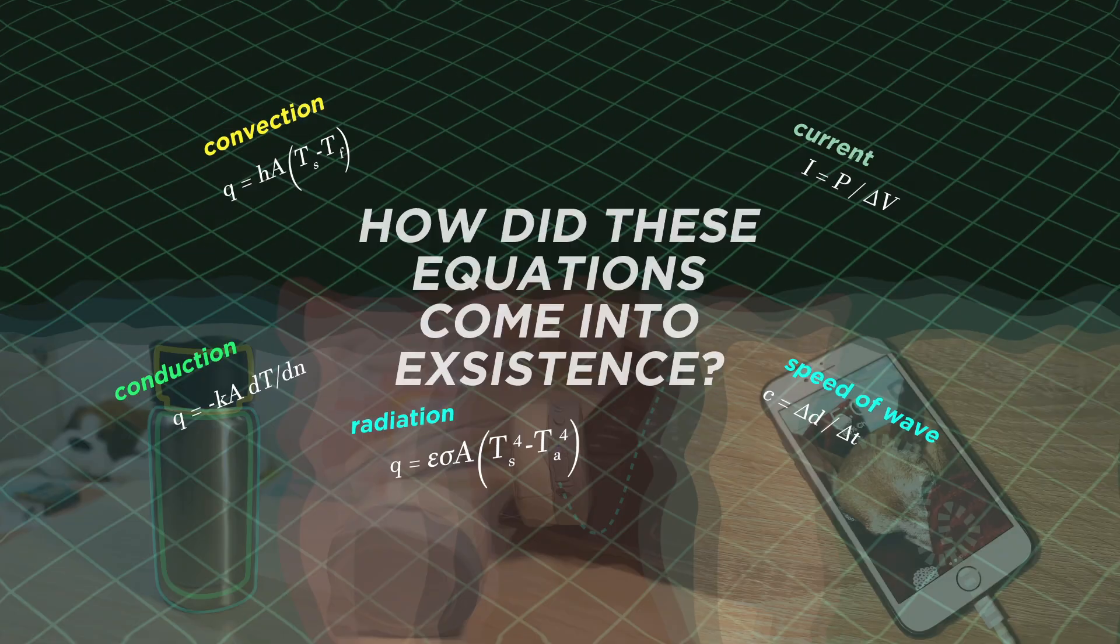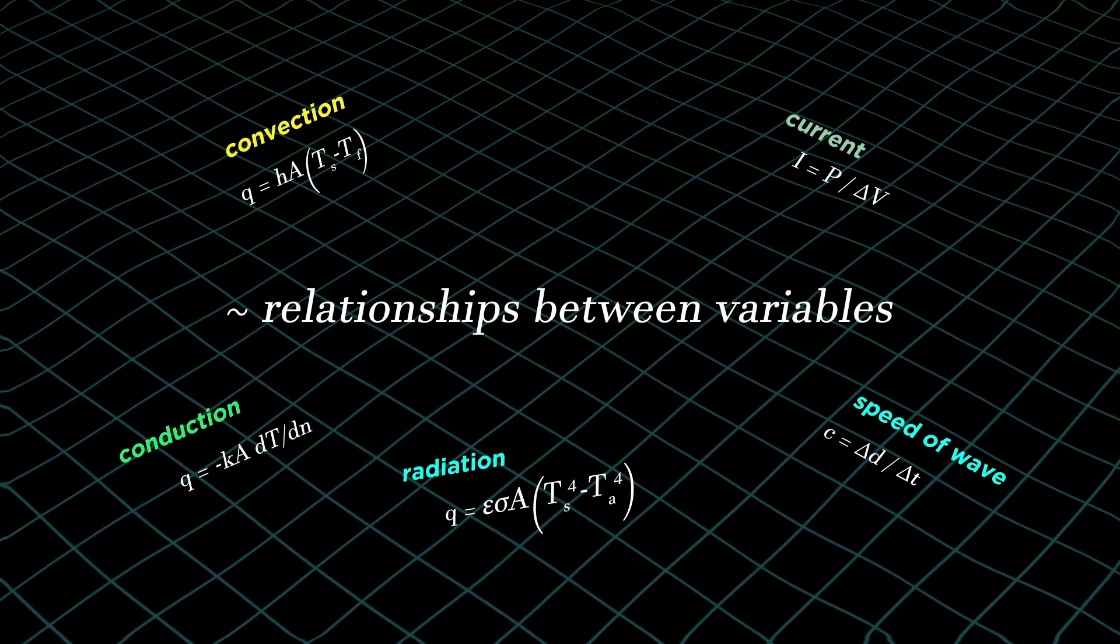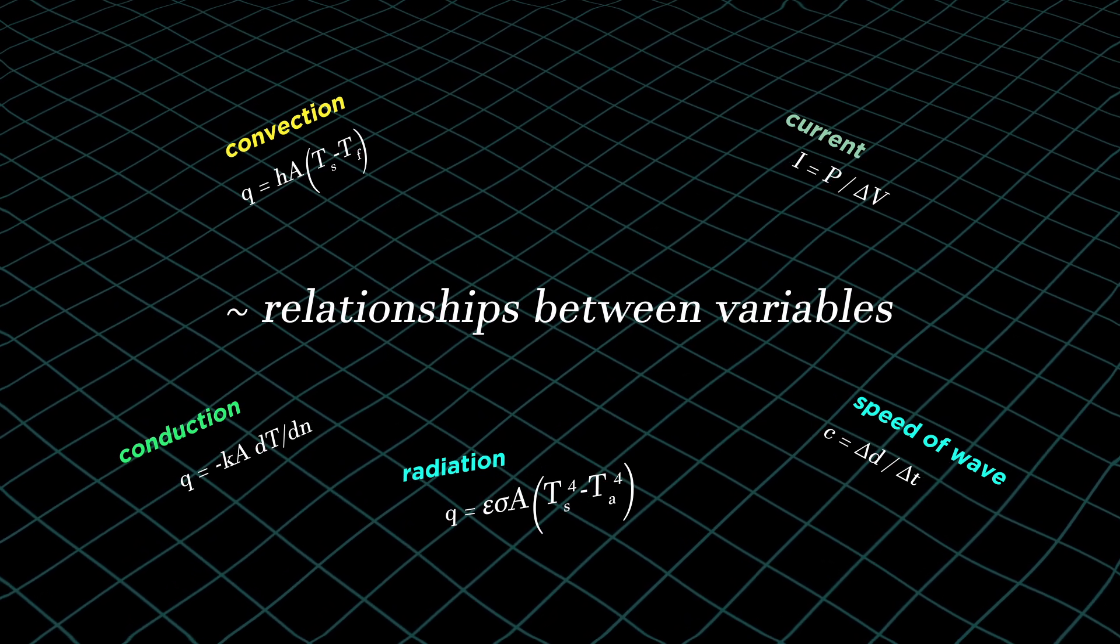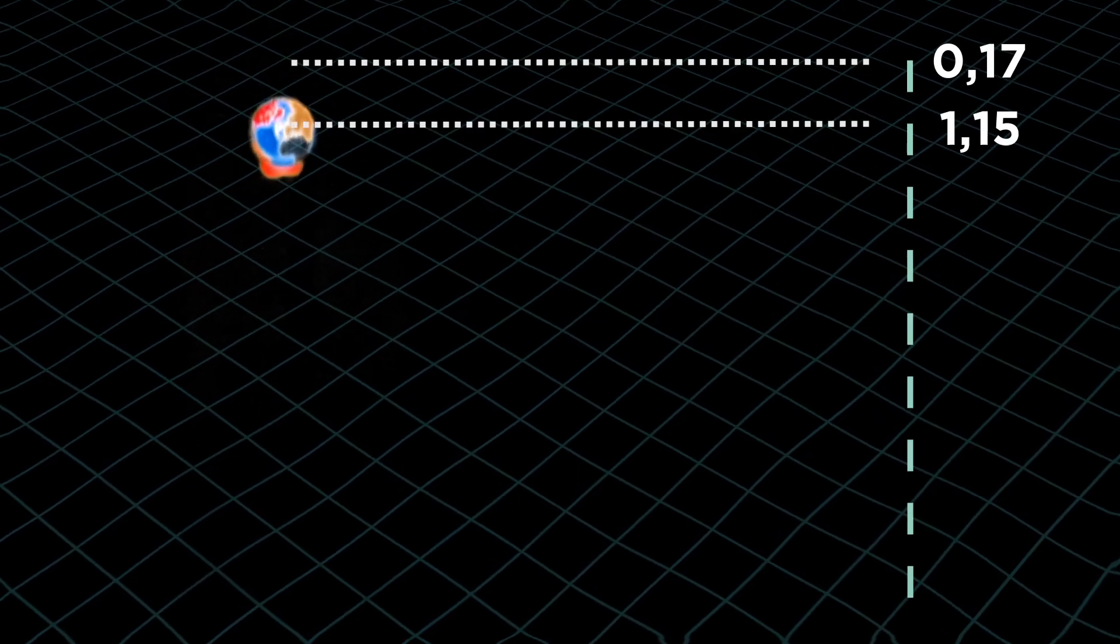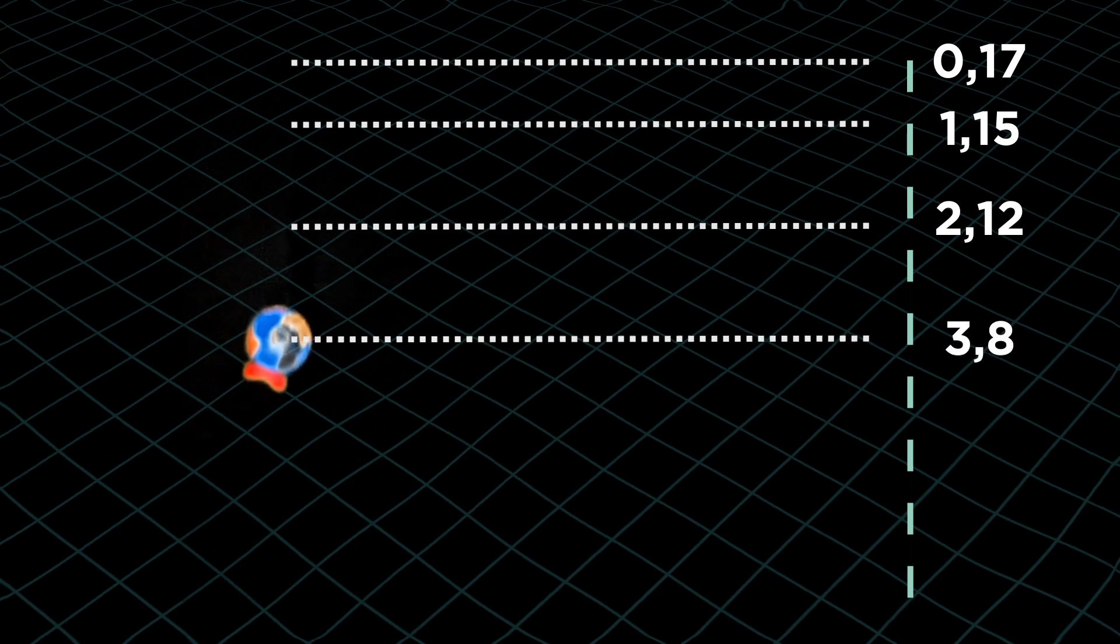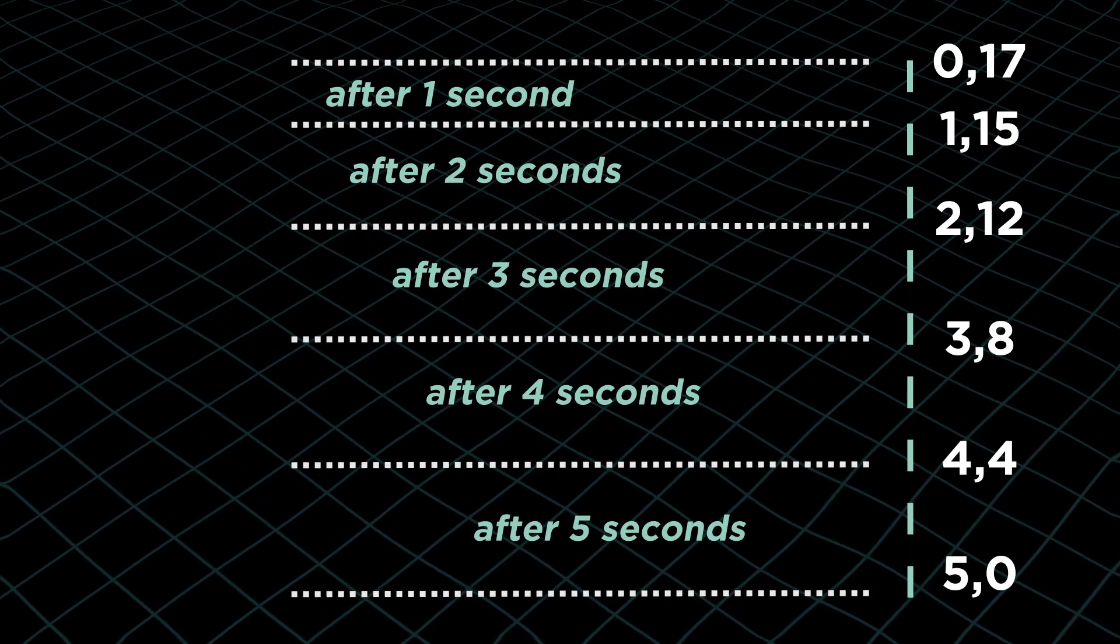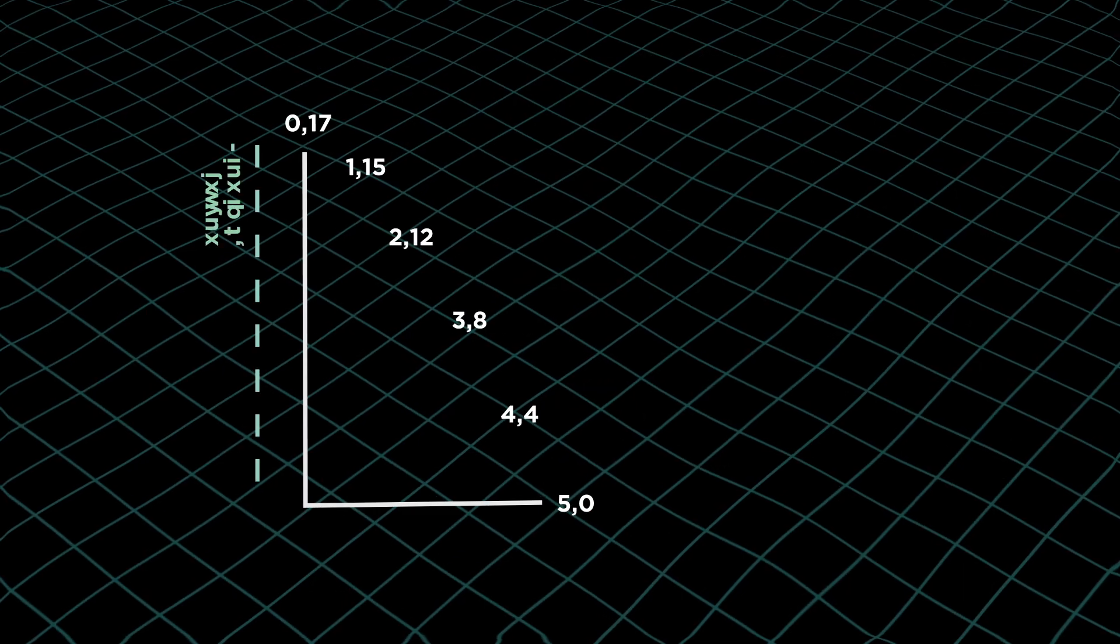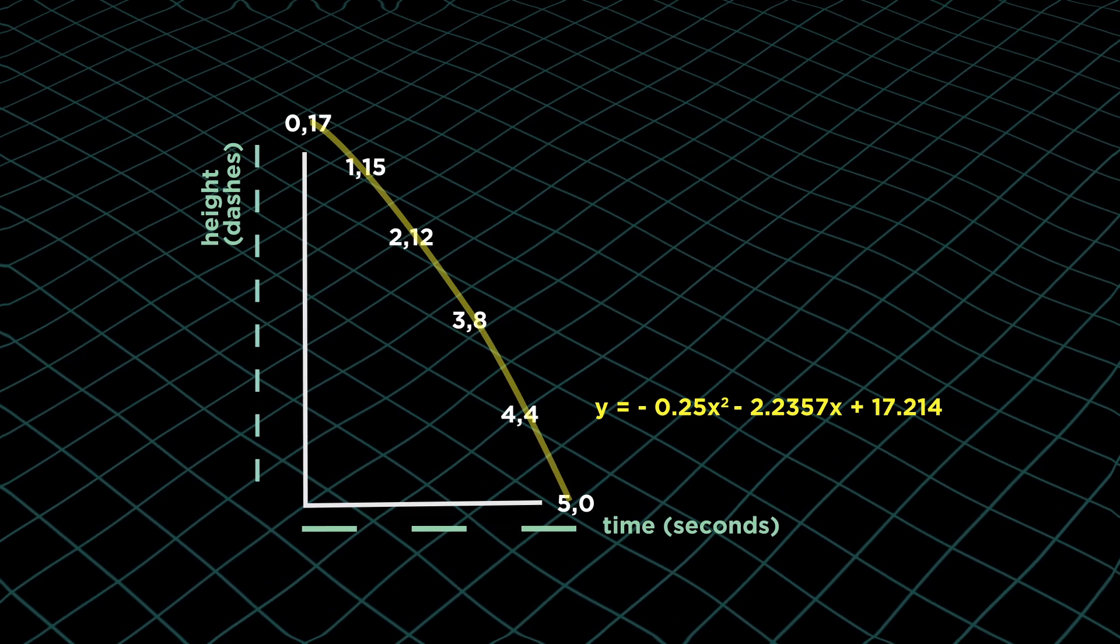Ever wonder how these equations came to existence? So fundamentally, we come up with equations by looking at relationships between variables. For example, I'm trying to relate height with the time it takes for something to reach the ground. Plot them in a graph so we can see the relationship clearly and we get a polynomial function. But how do you get an equation from something you can't exactly see, things like the curvature of space-time?